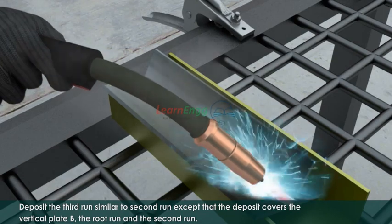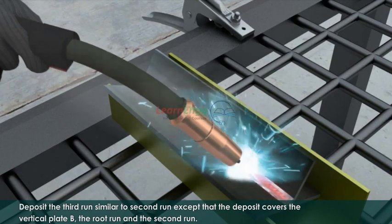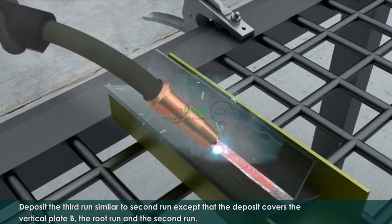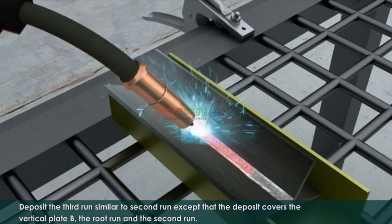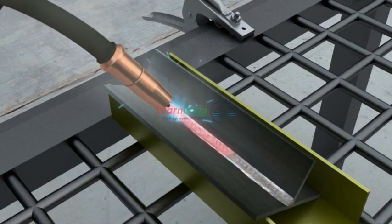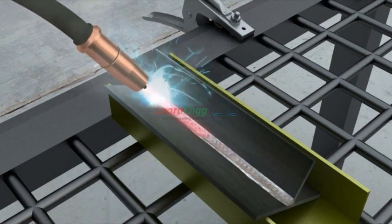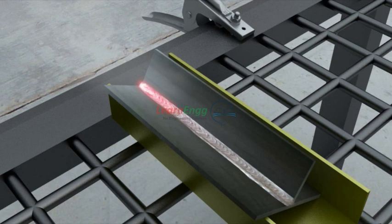Deposit the third run similar to second run except that the deposit covers the vertical plate B, the root run, and the second run.